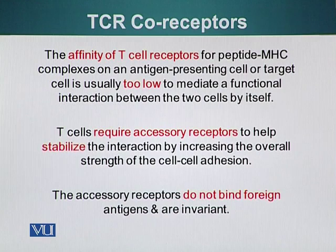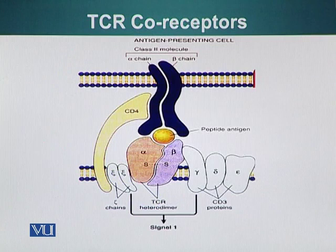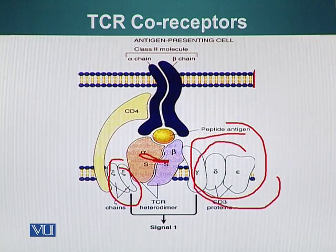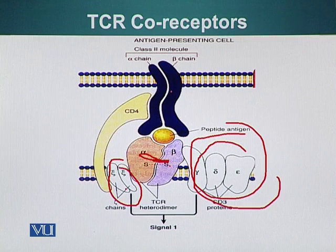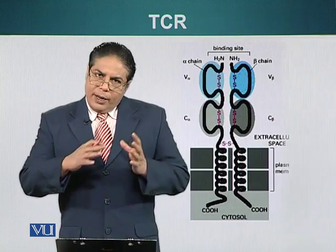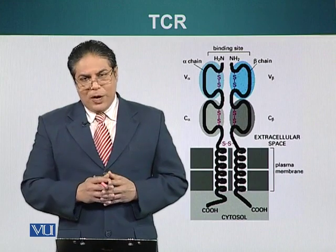The co-receptors CD4 and CD8 do not bind the foreign antigen — they are invariant and bind the MHC molecules. This slide shows a more detailed view of the TCR-MHC interaction: the CD3 cluster is associated with the TCR alpha and beta chains, and the zeta chains are also present. Once the interaction is stabilized between the TCR and MHC molecule with the help of a co-receptor, a signal is generated allowing the T cell to differentiate or respond. Next, we will see how antigen presenting cells activate T cells.